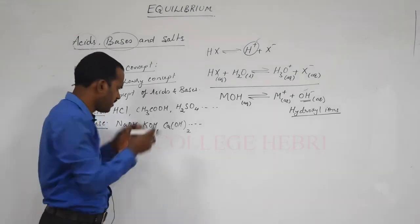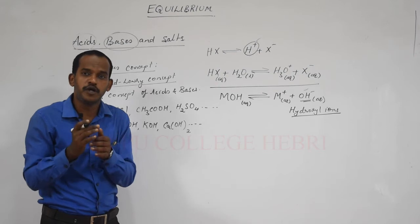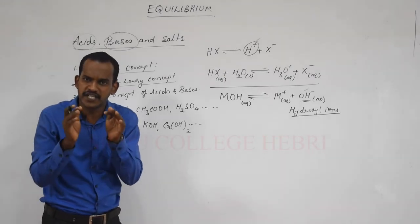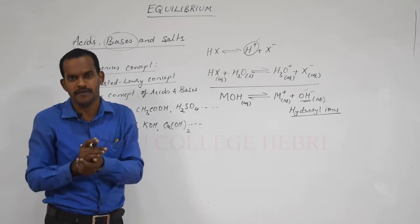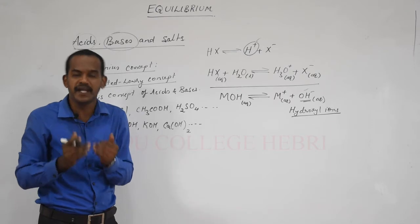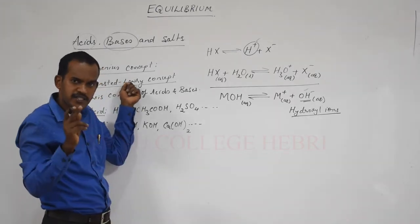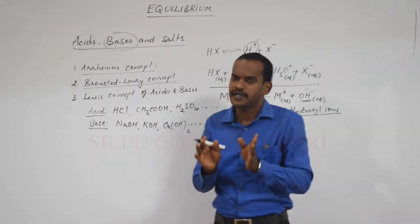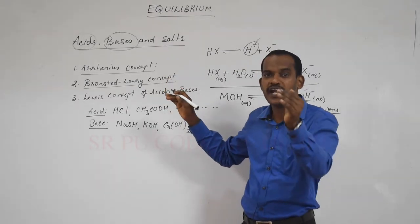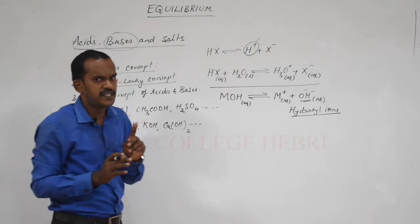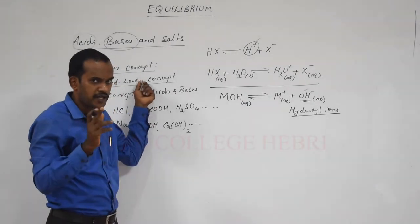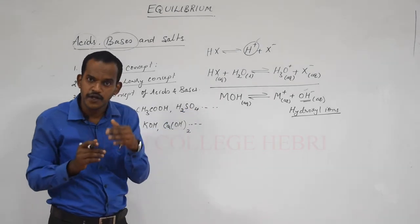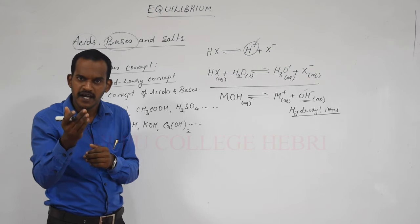Now let me move on to the second concept — the Bronsted-Lowry concept. It is based on the tendency to donate or accept a proton. There are some substances capable of donating H+, that is a proton, and some which are capable of accepting a proton. According to Bronsted-Lowry theory, acid is a substance which can donate a proton — we are not talking about aqueous medium now, it is any media. Base is a substance which can accept a proton.